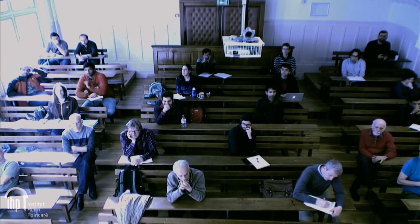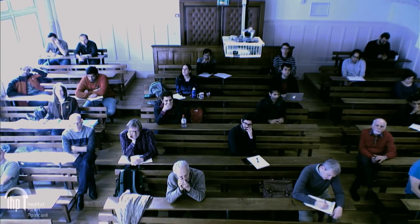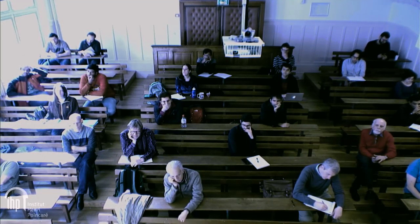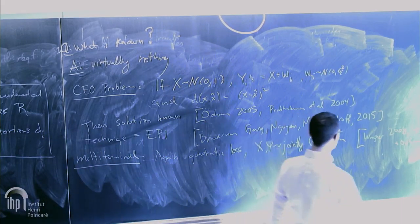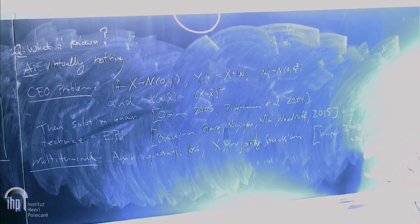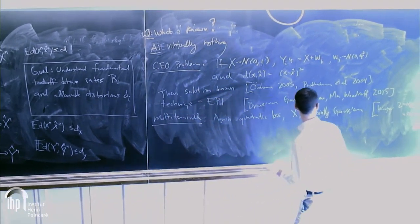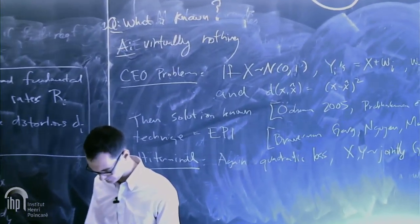They used the CEO results plus Oohama 1997. Even in this special Gaussian case with squared loss, it was introduced in the early 1970s and took 35 years to completely resolve — a series of three or four papers culminating in Wagner's tour-de-force that put the last piece in place.